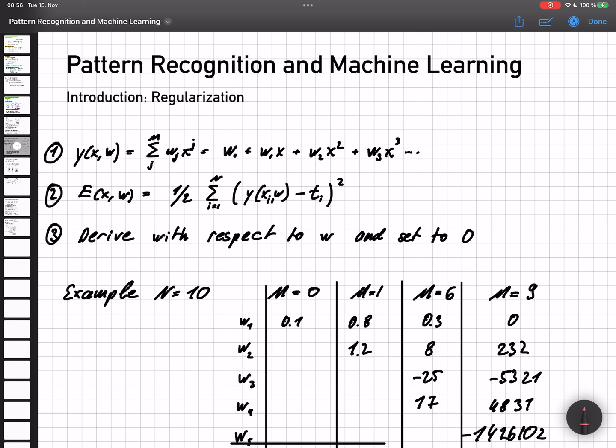In the last videos we talked about how we develop our function with which we want to approximate the data that we are given. We do this with a sum starting from j equals 0 to m, where m is our degree of the polynomial, and we start with w0, w1 times x to the power of 1 plus w2 times x to the power of 2 and so on till we end with wm times x to the power of m.